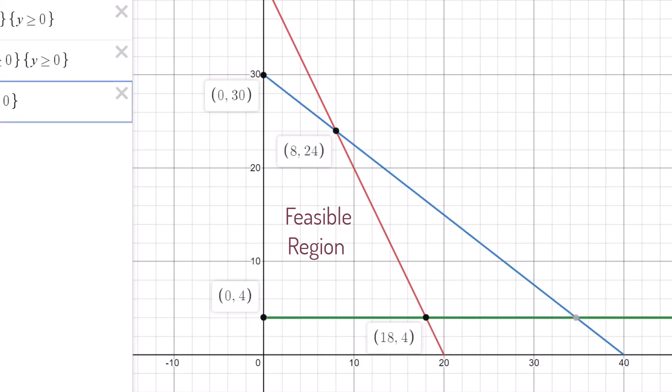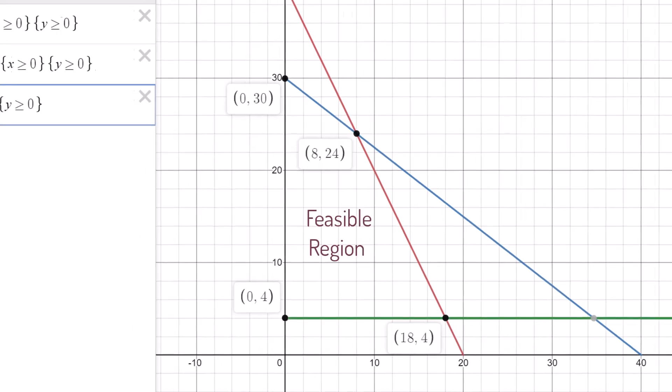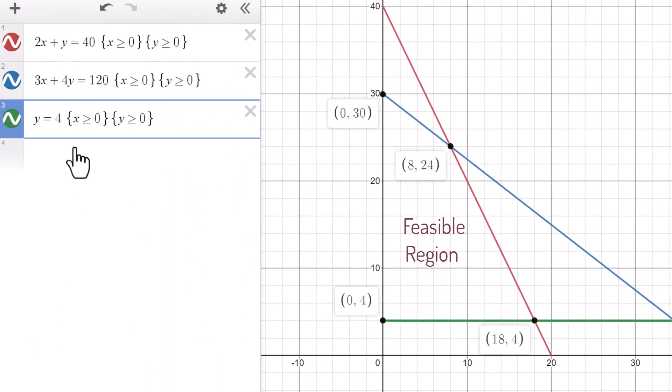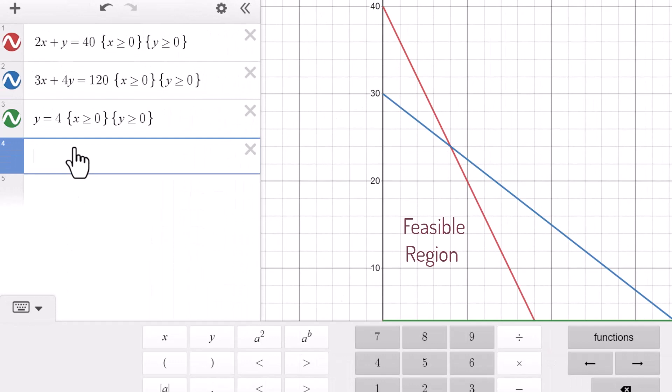Now if we want, we can evaluate the objective function at each of these points to determine which of them is the optimal solution point. On the other hand, we can add the objective function line as well. The objective function is 2x plus 5y. We can make it equal to any letter, say z.